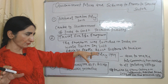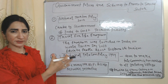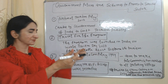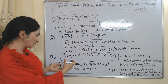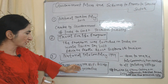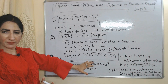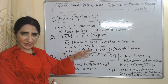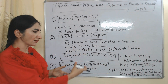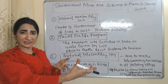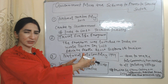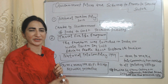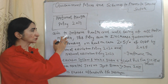The National Telecom Policy of 1994 aimed to make telecommunication available to all, including villages. The PM-WANI (Prime Minister Wi-Fi Access Network Interface) program was approved by the Union Cabinet in 2020, with the main aim of providing affordable high-speed internet connectivity, particularly to rural areas, through a national public Wi-Fi network.